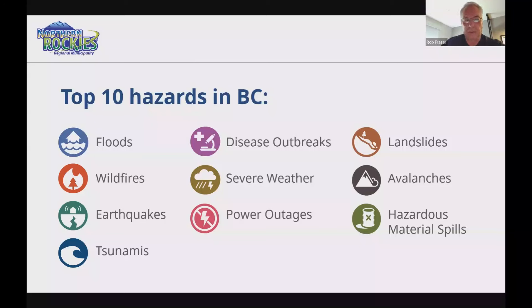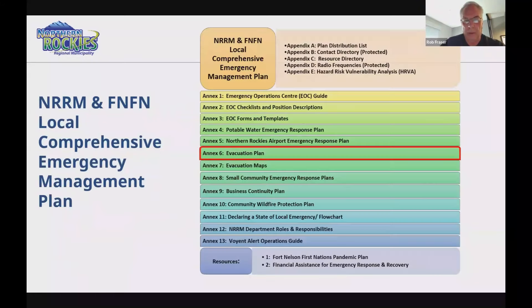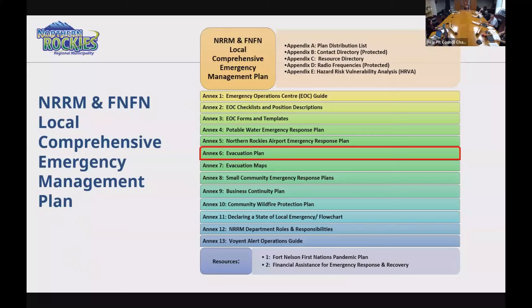Council member: I wanted to ask if that entire document with all the annexes is available on the webpage and to the public. It is generally available to the public. We pulled it down to update it for the new Emergency and Disaster Mitigation legislation, so we had to change all references to the old Emergency Program Act. I'd say 90% of them are updated and will be available by end of this month, with everything posted except those items listed as protected.